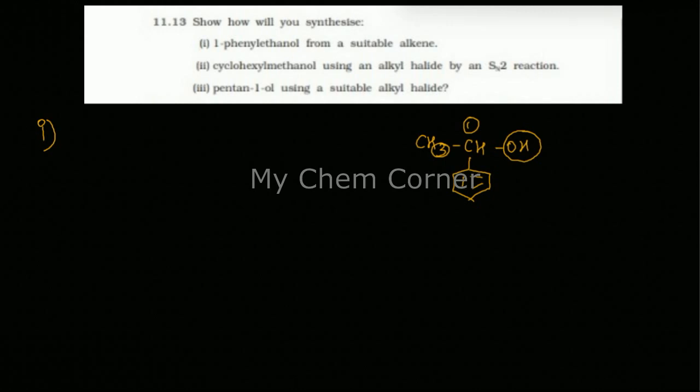So between these two carbons I am just going to put a double bond and remove the OH group. So here I will put CH2 double bond CH and I am having a phenyl ring. So I have my starting material which is an alkene.